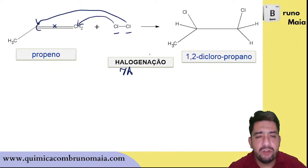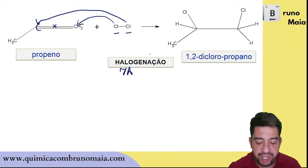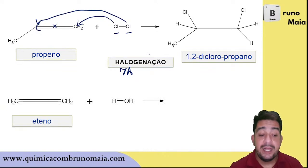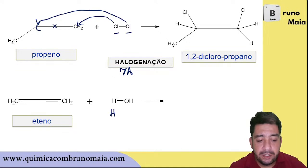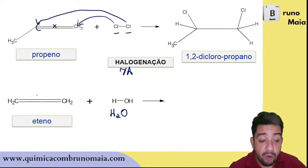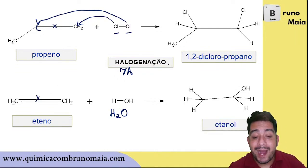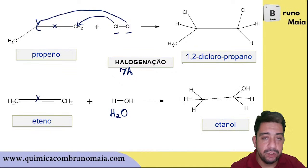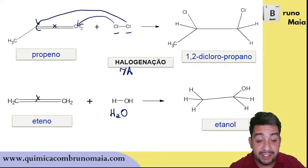I call this reaction halogenation, because I added a halogen from group 7A. It could have been F₂, Br₂, I₂ — any of the halogens from group 7A. Now look at this one: I am adding HOH. What is that? That's water. So I break the pi bond, one H enters one carbon and the OH enters the other. If I am adding water, I call this reaction hydration. The hydration of an alkene leads to the formation of an alcohol. From the hydration of ethene, I formed ethanol.